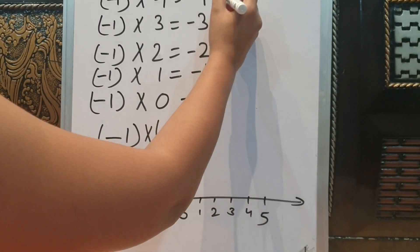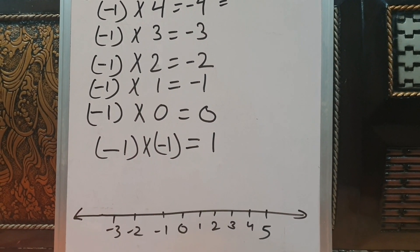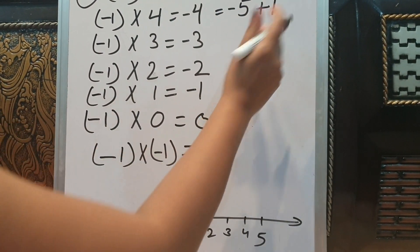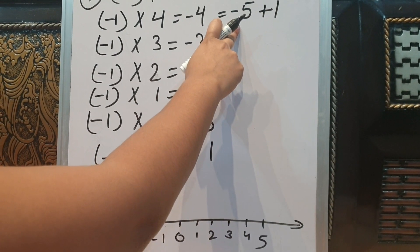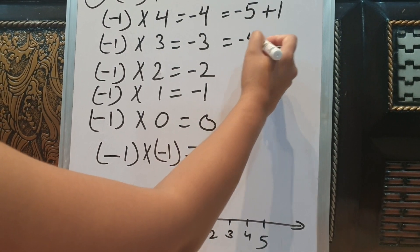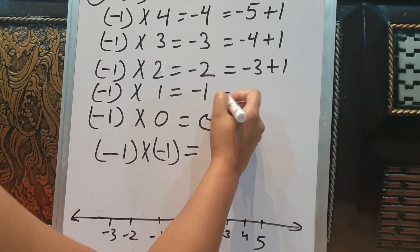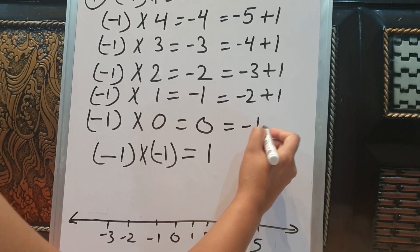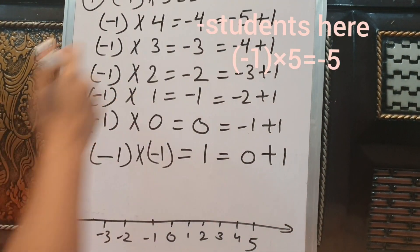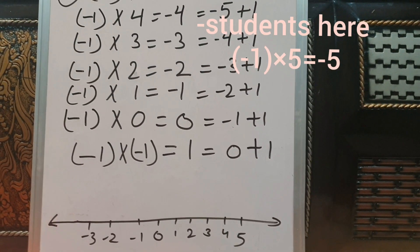We can also write this pattern as: each result increases by 1, so −5+1 = −4, −4+1 = −3, −3+1 = −2, −2+1 = −1, −1+1 = 0, 0+1 = 1. This shows the pattern of question number 4.